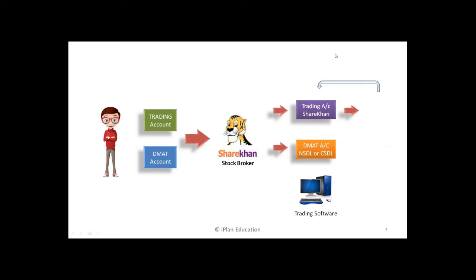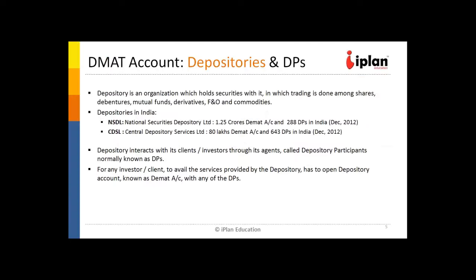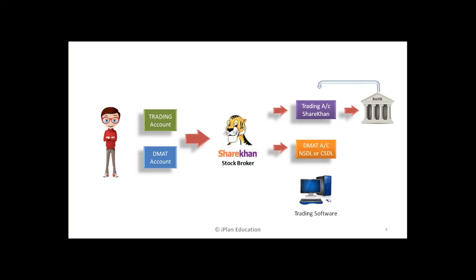So this trading account is opened by your broker and linked to the bank. So you can easily transfer money from the bank to the trading account. And DMAT account is maintained by NSDL or CDSL. So trading account is normally maintained by your broker, maybe Share Khan, Angel Broking, anybody. And the DMAT account is maintained by NSDL or CDSL and these are linked to the broker. So normally the brokers are a member of this CDSL and NSDL. This is National Securities Depository Limited and Central Depository Services Limited. And these brokers also give you trading software through which you can punch the order and trade.